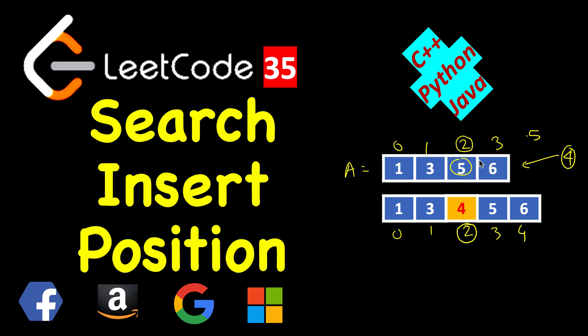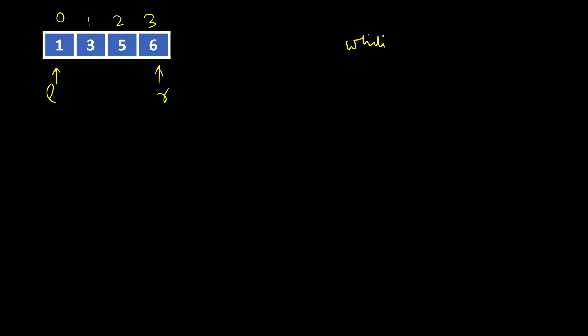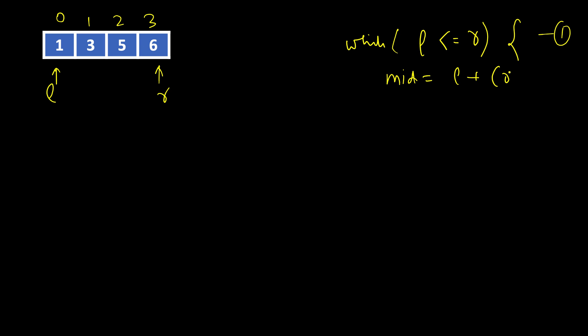We'll use binary search, but you need to be slightly careful — there is a possibility of making mistakes if you don't consider all the scenarios. The basic binary search format: l on the first index, r on the last index. We define l and r, then run a loop. One common confusion is whether to use l less than r or l less than or equal to r.